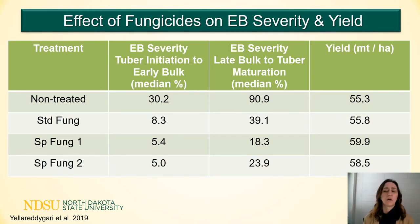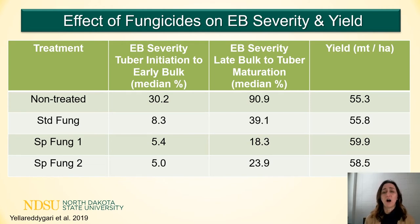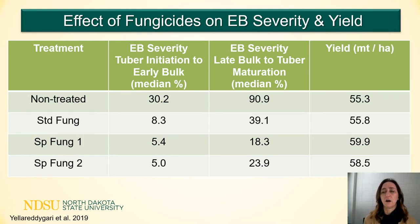Here are some results from those studies. The table illustrates the effect of each fungicide group — non-treated, the standards, specialty group one, and specialty group two — at two time points: early tuber bulking and late tuber bulking. At early tuber bulking, the non-treated had about 30% early blight severity; standard fungicides reduced that to 8%, but the specialty fungicides reduced it to about 5%. The trend holds at the late tuber bulking stage, and in the far right column you can see those specialty fungicides increasing yield by about 3 to 4 metric tons per hectare.